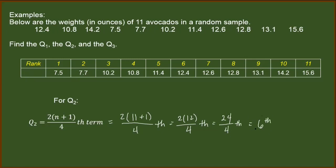So I hope you got the same answer. The median or the second quartile is the sixth in rank, meaning this data. We have Q sub 2 as 12.4 ounces.